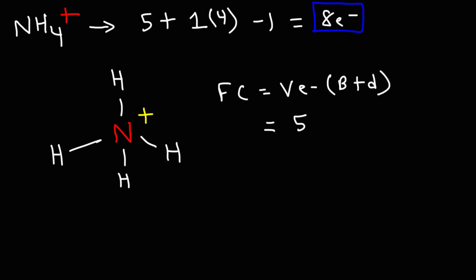So nitrogen has 5 valence electrons. In this example, we see it has 4 bonds, no dots, or no lone pairs. So 5 minus 4 is plus 1. Thus the positive charge that we see in the ammonium ion is attributable to the formal charge in the nitrogen atom.